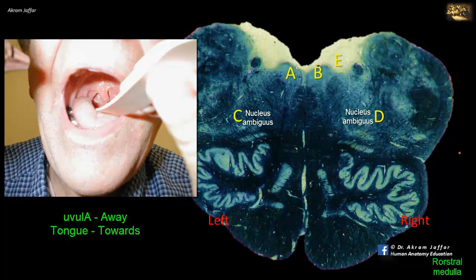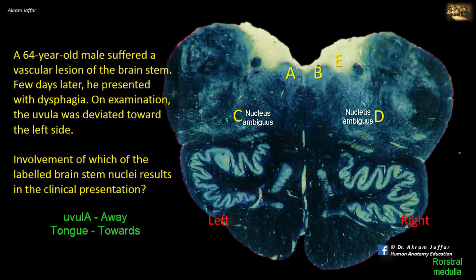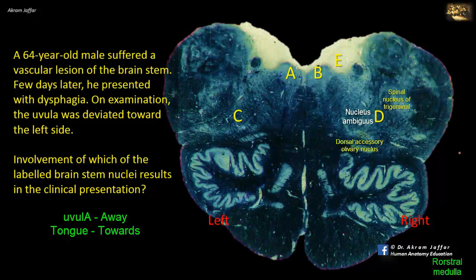The nucleus ambiguus consists of a small group of motor neurons, difficult to find in section, but located within the reticular formation, medial to the spinal nucleus of the trigeminal and posterior to the dorsal accessory olivary nucleus. So it is either C or D. Since the uvula deviated toward the left, the right side was affected by the vascular lesion, so the answer is D — nucleus ambiguus on the right side is involved in this vascular lesion resulting in the clinical presentation. The vascular lesion is most likely a lateral medullary syndrome from a lesion affecting a branch of the posterior inferior cerebellar artery.